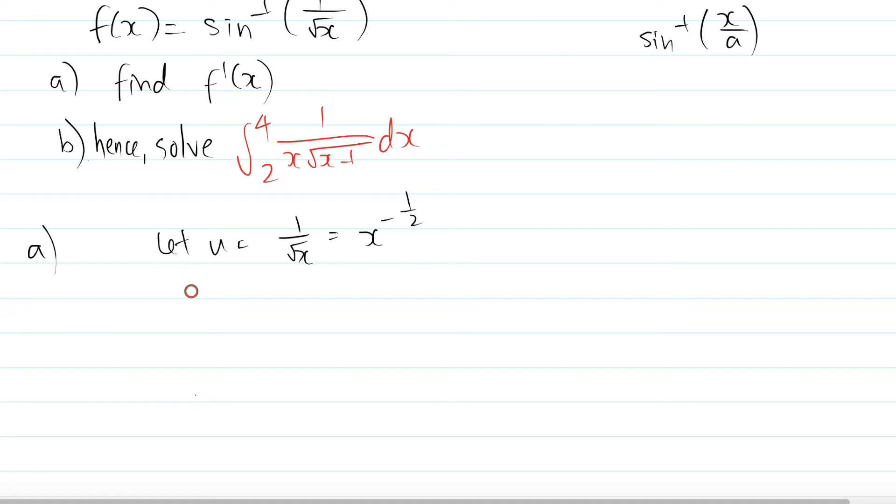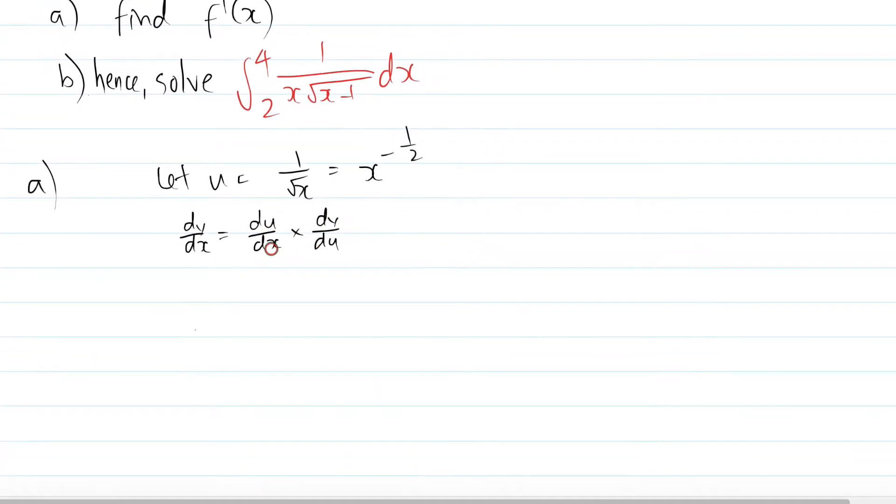Right, so this is like chain rule. If you want to find dy/dx, you go du/dx multiply by dy/du. Because the du cancels out, you're left with dy/dx. How do you find du/dx? Well, we already have u in terms of x. You can easily derive that to get your du/dx. So bring negative half down, subtract power by 1, we get negative 3 on 2. That's du/dx.